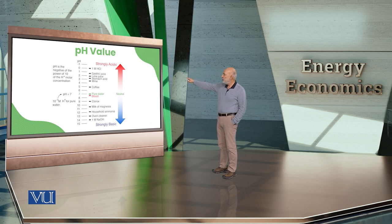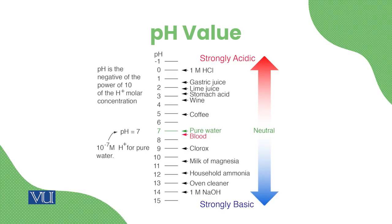You can see on the scale things like wine, coffee — these are all acidic. Coffee is very acidic. pH 7 is pure water. Your blood is slightly above 7. Above 7 means basic.